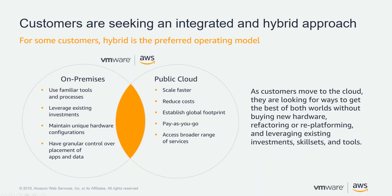Customers do see the benefits of a hybrid approach to their IT infrastructure. With on-premises infrastructure, you have familiar use of processes and tools, leveraging existing infrastructure investments, unique hardware configurations, and granular control over apps and data. With public cloud, the benefits include the ability to scale, reduce costs, a global footprint, and a pay-as-you-go model. VMware Cloud on AWS combines the best of both worlds — no new hardware purchase, no refactoring or replatforming, and leveraging existing tool sets and skill sets.